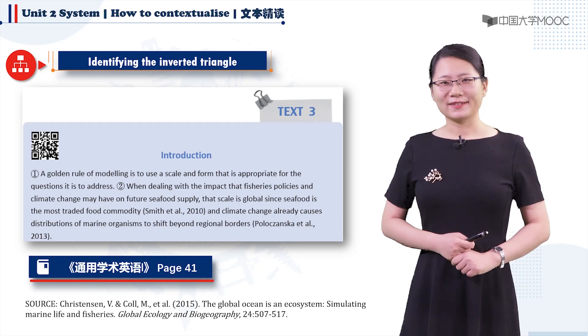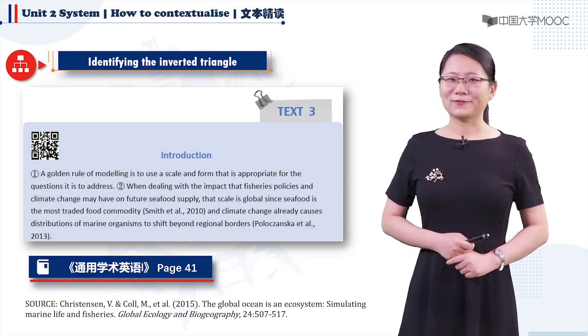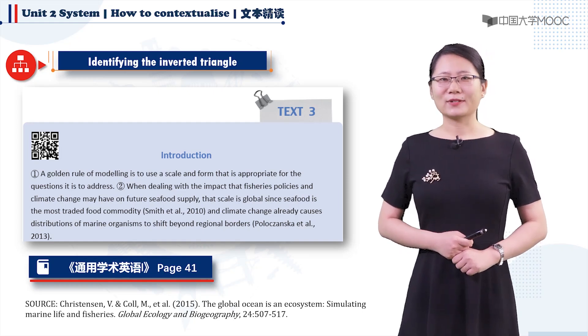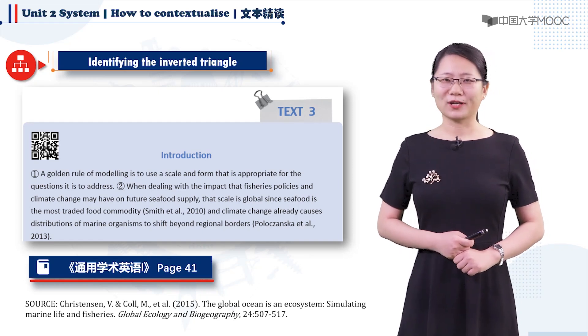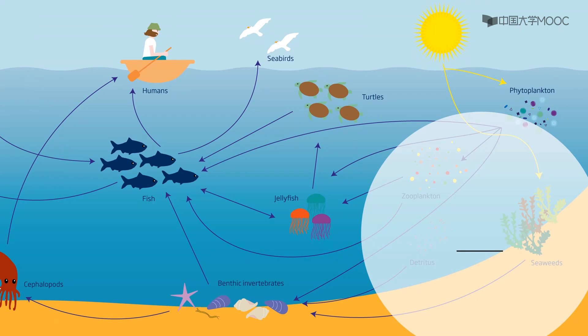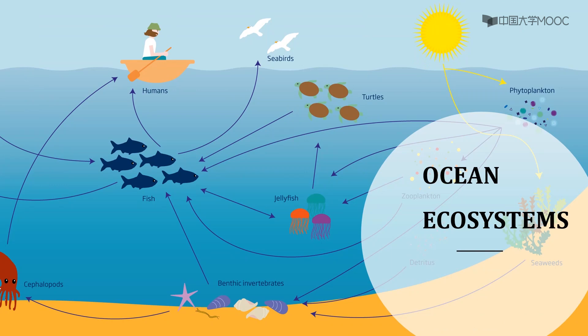As student readers, we also need a bit of background information to familiarize ourselves with the topic before we start. This paper is concerned with the topic of ocean ecosystems. Ocean ecosystems are made up of a community of living and non-living things. They include everything in the oceans, as well as the saltwater bays, the shorelines and so on.